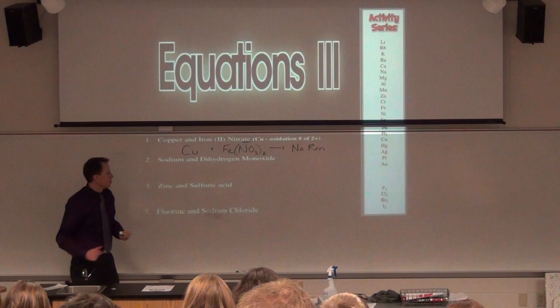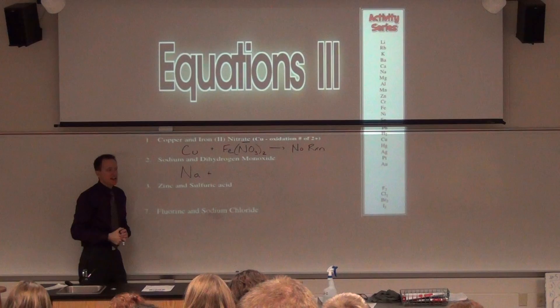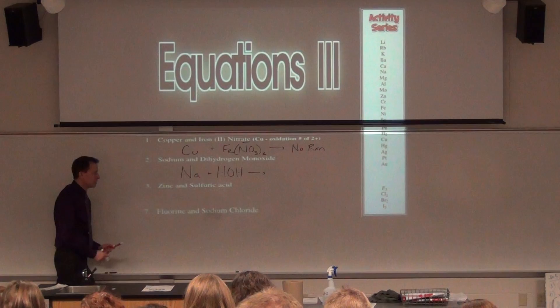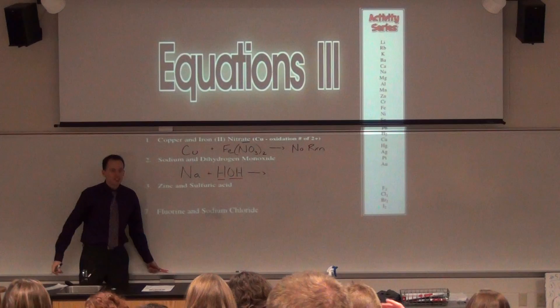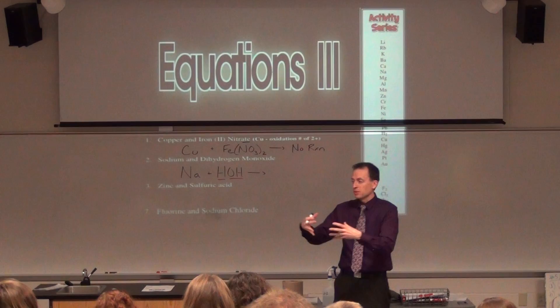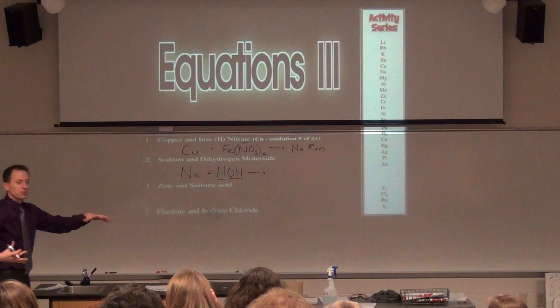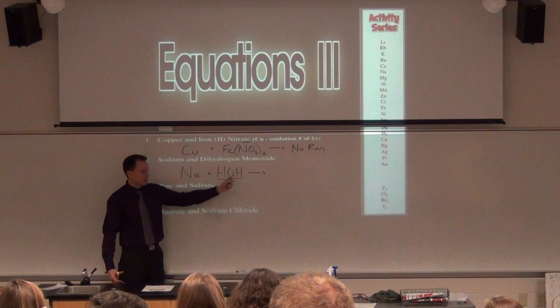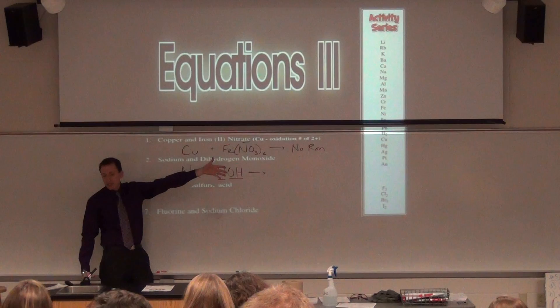Number two: sodium plus water. Write water as HOH starting today — it helps because water breaks up into H (hydronium ion) and OH (hydroxide ion). Those are the bases of pH: acidic substances have lots of H, basic substances have lots of OH, water is neutral because it has both in equal amounts. Writing it as HOH, Na is trying to kick out the H. Can Na kick out H? H is much lower, so yes. H is kicked out, Na goes in.